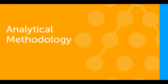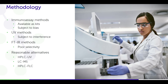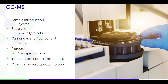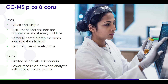Let's take a look at the analytical methodology. You can use immunoassay kits, which have some bias, or optical methods, which have some specificity and selectivity problems. So we decided instead to go with a GC mass spectrometry approach. It's simple to use, has high resolution, and gives quantitative results down to parts per billion levels. There is some limited selectivity for some of the isomers.